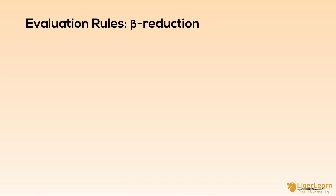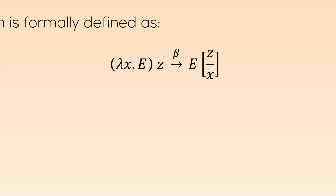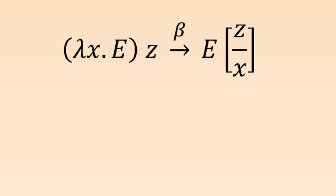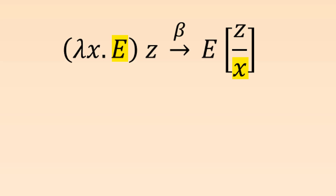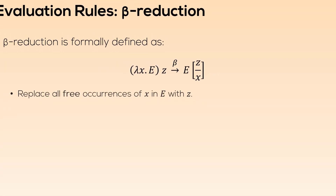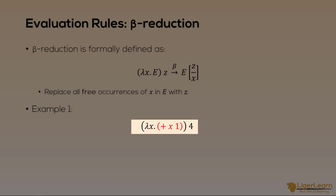Beta reduction is another rule which can be applied to reduce a lambda expression to a simpler one, but this time it applies to lambda abstractions. Beta reduction is formally defined as: a lambda abstraction with a formal parameter named x and a function body of expression E, applied to argument z, is beta reduced by replacing all free occurrences of x in the expression E with z. That definition sounds complex, so let's make it concrete. A lambda abstraction effectively defines an anonymous function — this one has a single variable and the function body just adds one to it.